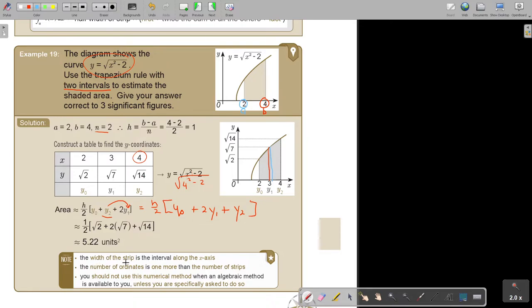So this h is the width, the interval along the x-axis. The number of ordinates is one more than the number of strips. You should not use this numerical method when an algebraic method is available unless you are specifically told to do so.